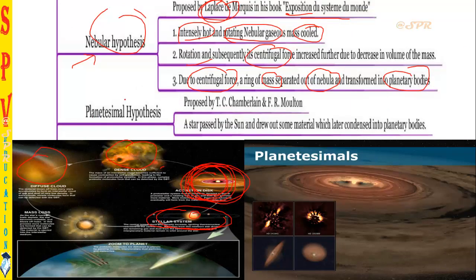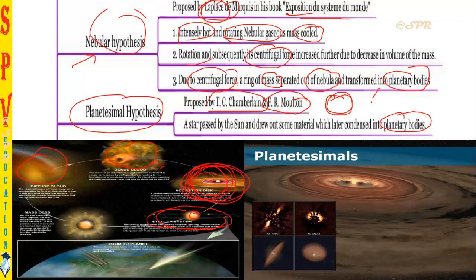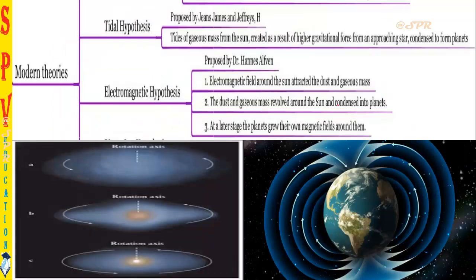The planetesimal hypothesis was proposed by T.C. Chamberlin and F.R. Moulton. They said a star passed by the sun and drew out some materials, which later condensed into planetary bodies. When a star comes close to the sun, their mutual attraction causes planetesimal particles to move away from the sun and form as planetary bodies.